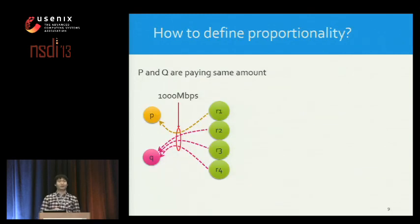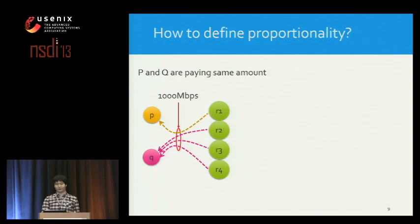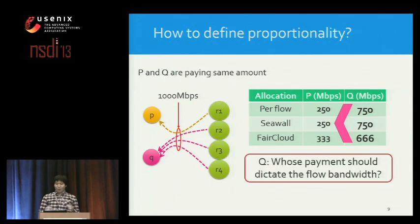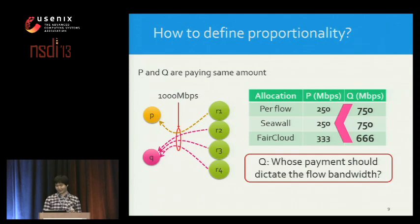Another challenge with inter-tenant traffic is defining proportionality. In this example, there are three tenants P, Q, and R, and P and Q have a dependency on R. P has one flow from R and Q has three flows from R — these are VM-level flows. Although P and Q are paying the same amount, all existing schemes allocate more bandwidth to Q, which is not desirable. More broadly, when there is a flow between two independently paying tenants, it's not clear how to combine two payments to decide bandwidth for the flow.